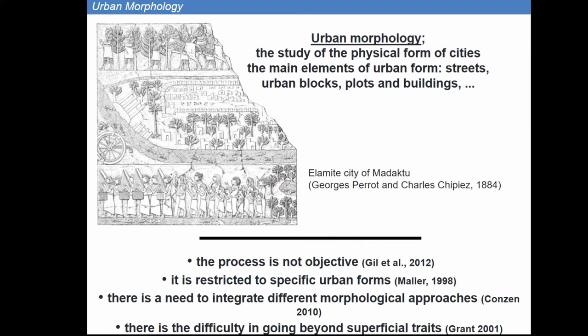I will shoot myself again by saying that urban morphology practice is not objective — it is case-specific. What we use for this site would not be valid for Pompeii, and vice versa. It is restrictive to specific urban forms. When you go to the urban morphology literature, you see multiple different approaches coming from different directions and reaching different destinations, so there is no consensus on how to study urban morphology. There is also difficulty in going beyond superficial traits — shapes and plot types — because we do not want to label a city as a certain kind, since these are living things.